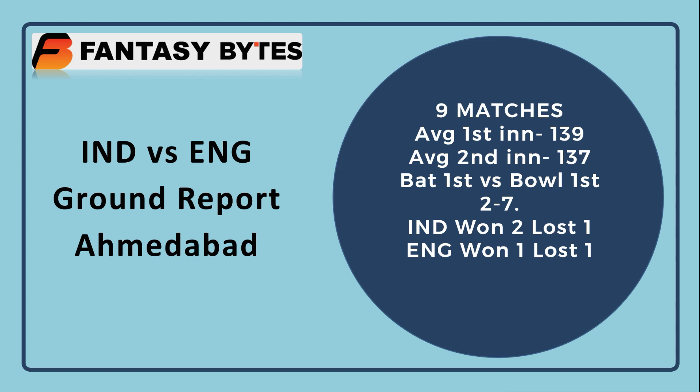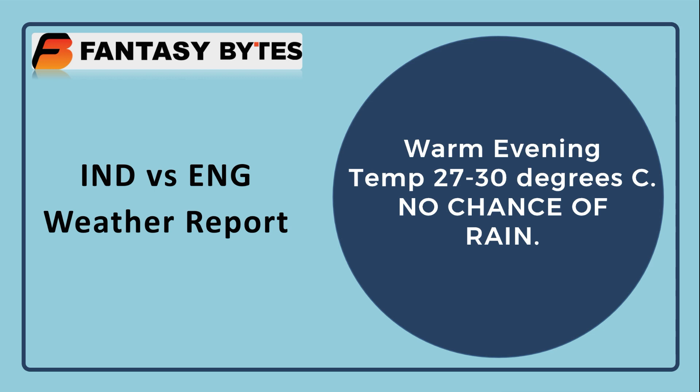Looking at 9 matches, the average first innings score has gone up slightly after the last game to 139, and the average second innings score is 137. Bowling first is advantageous here by a 7-2 ratio, making the toss quite crucial. India has won 2 and lost 1 at this ground, England has won 1 and lost 1.